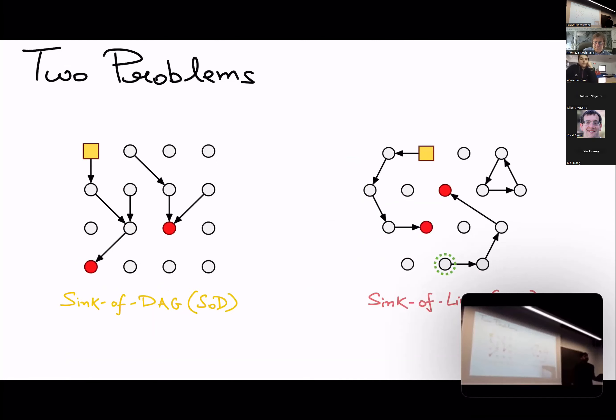So I want you to keep two problems in your working memory. I'll call them sink of DAG, here you have some grid, and I'll call the vertex one comma one the distinguished source, which I promised you always has an outgoing edge.